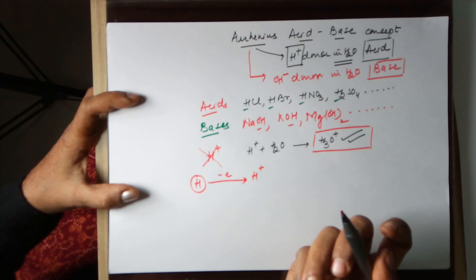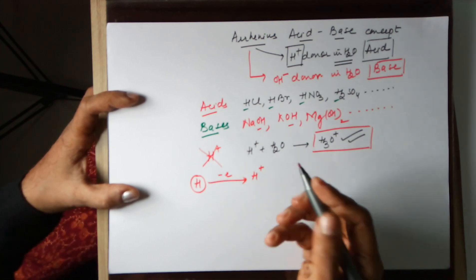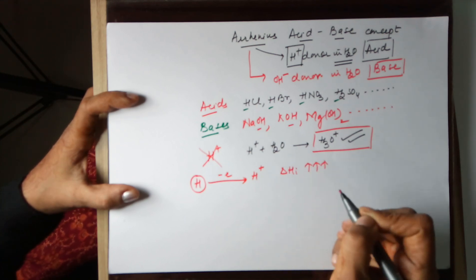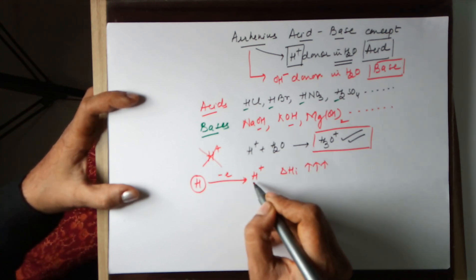Pretty high. Therefore, removing the electron is very difficult. The ionization energy would be extremely high. Hence this is not easy.